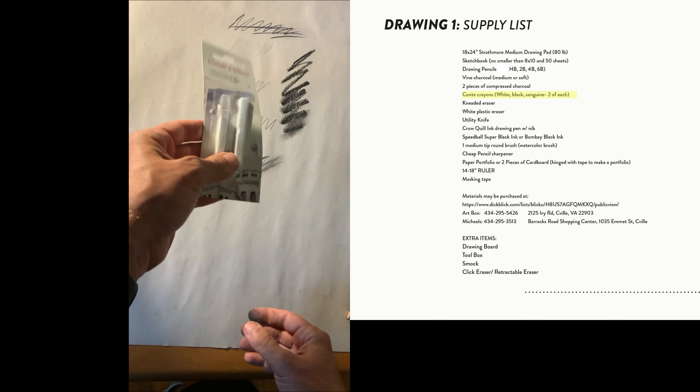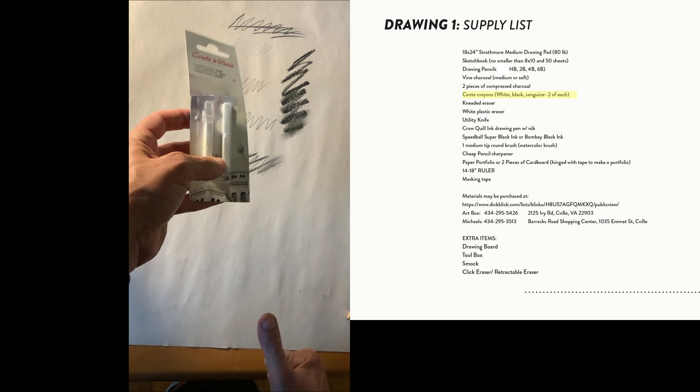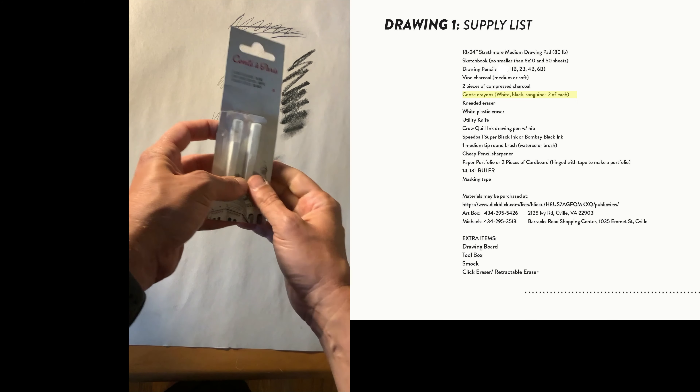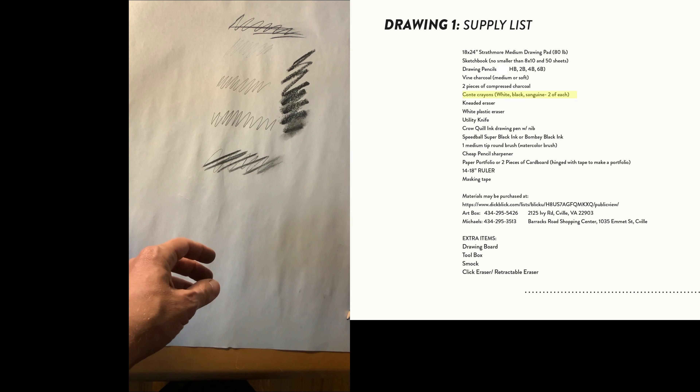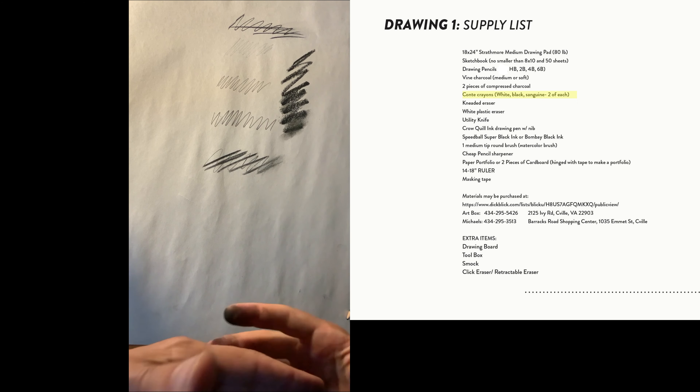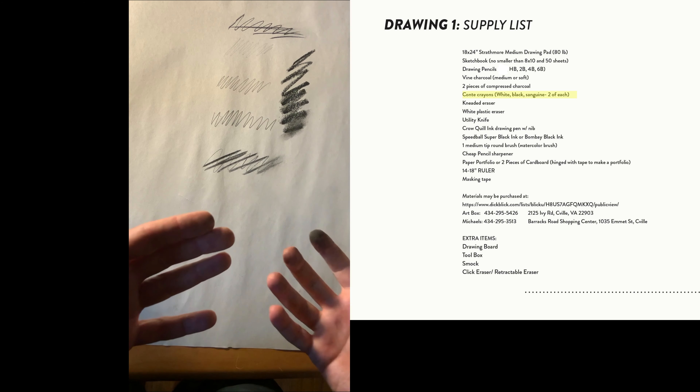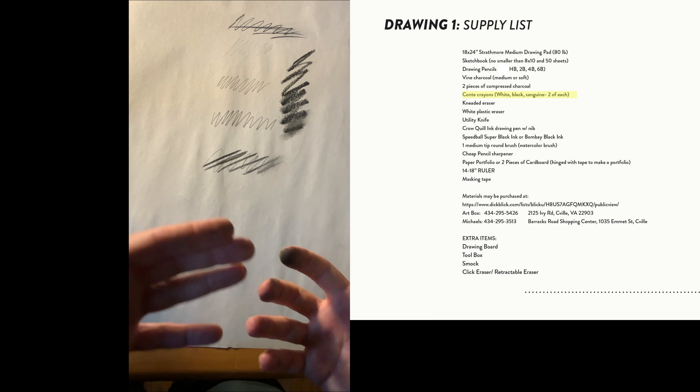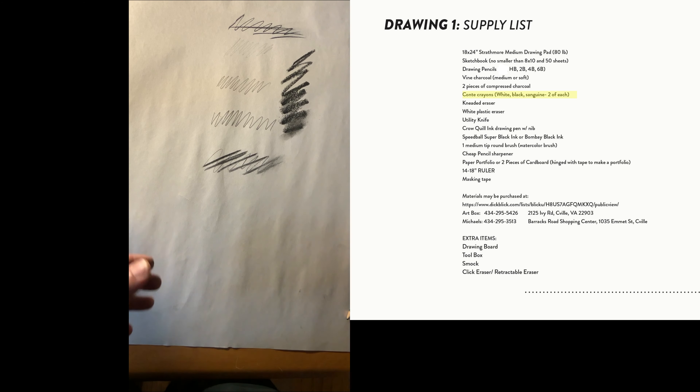You can also optionally get white Conté and sanguine — those are nice options for the more advanced assignments.